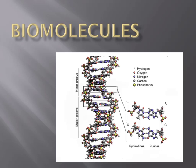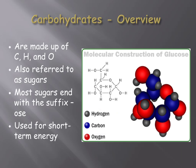The picture on this slide is of DNA, a type of nucleic acid, which is one of the four different types of biomolecules that will be overviewed here. The first of the four types of biomolecules that will be discussed in this video are carbohydrates.